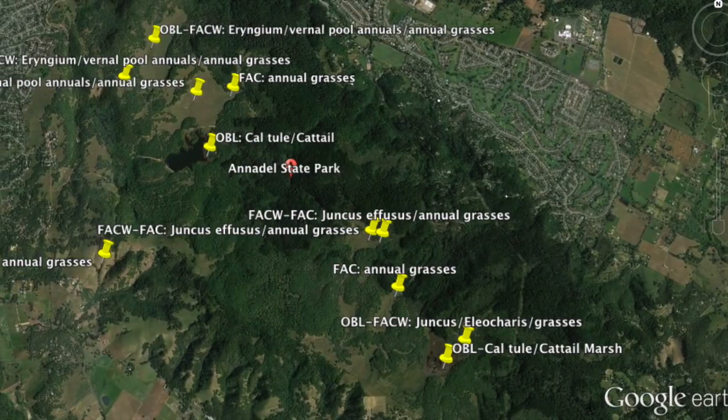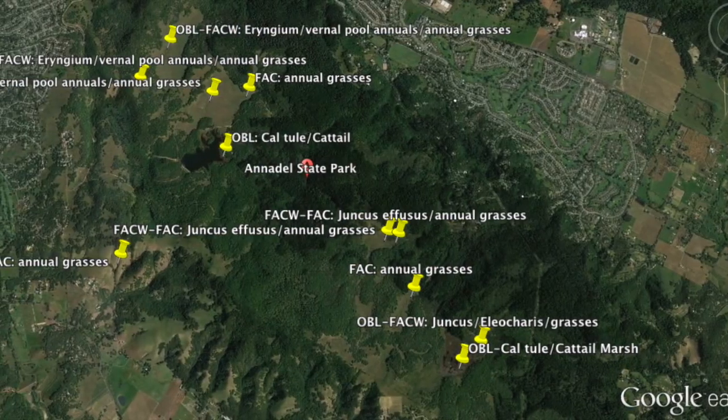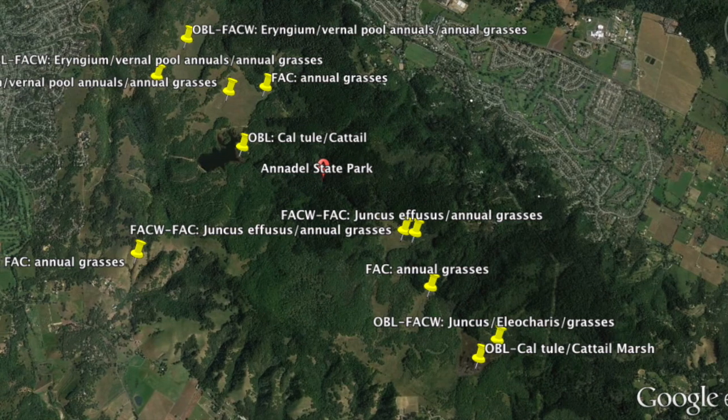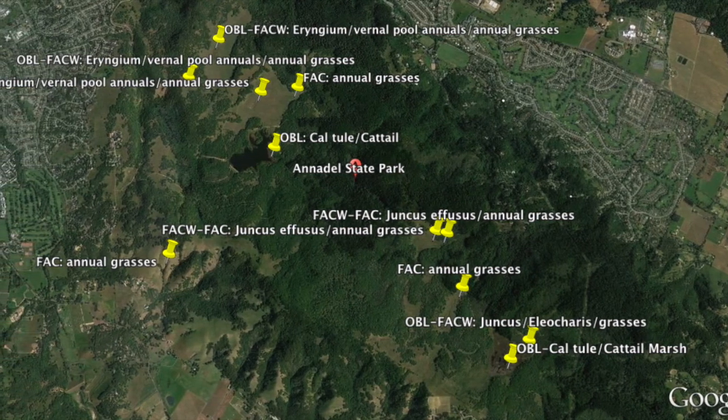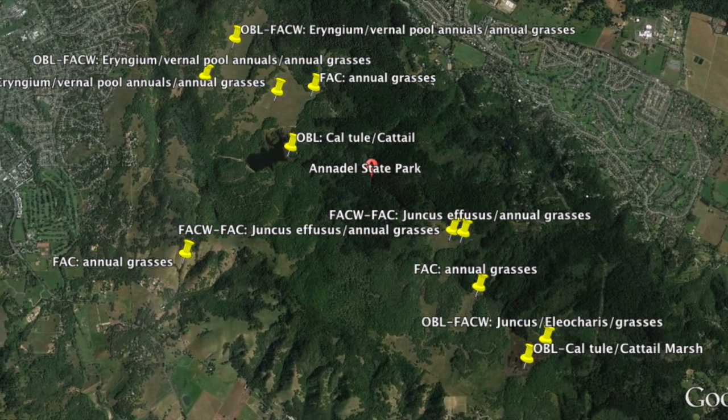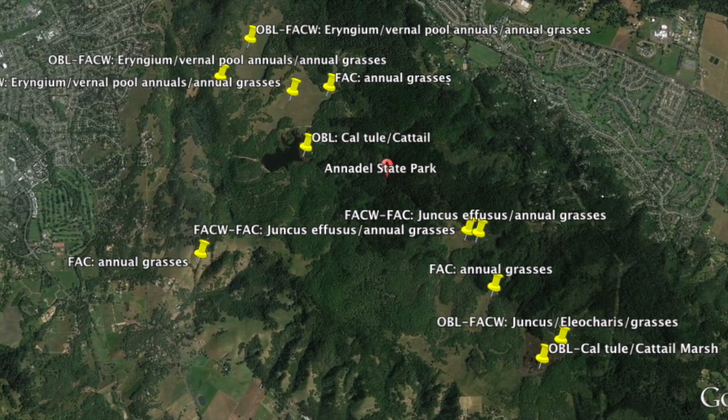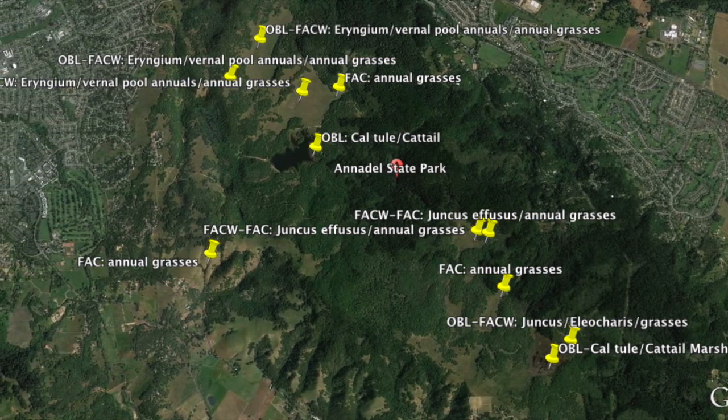Using only the wetland vegetation parameter and applying the dominance test to delineate wetlands is a conservative approach. Using an aerial image, we were able to get a visual identification of wetlands on Google Earth from Aaron Arthur, a botanist with extensive experience delineating wetlands.